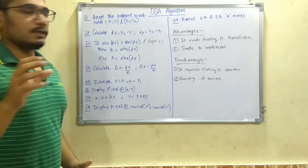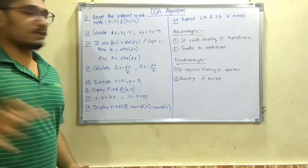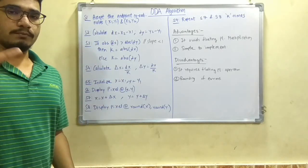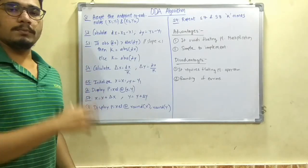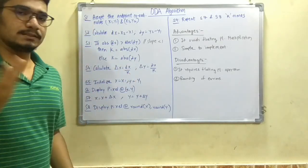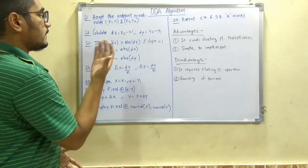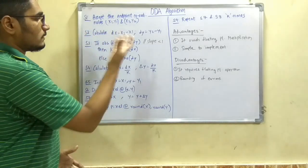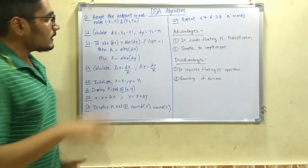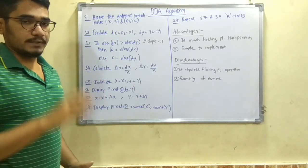So ABS is written in that way. ABS DX, if it is greater than ABS of DY, then the slope is less than 1, and if that particular condition is satisfying this, then we take K is equal to ABS of DY.